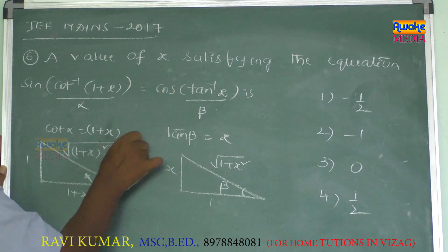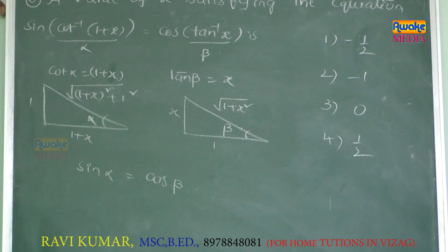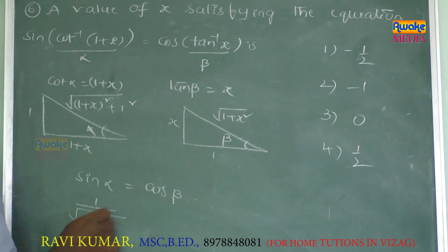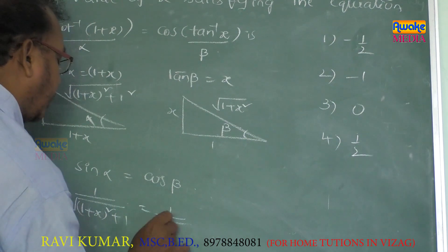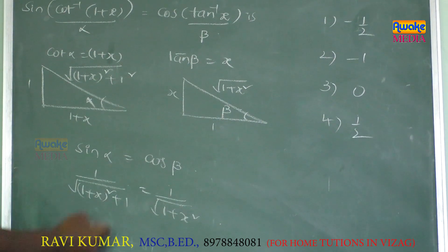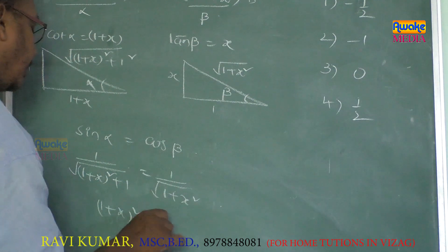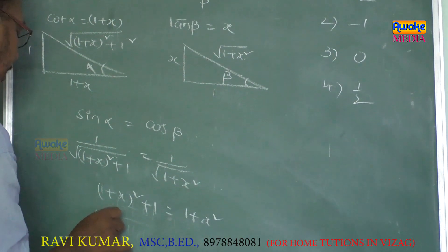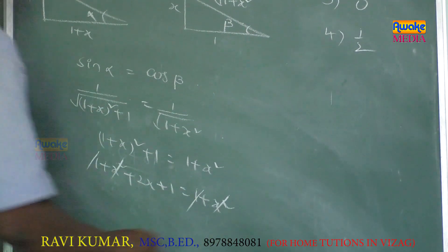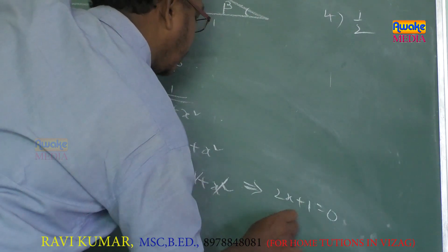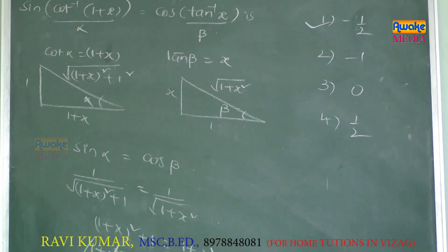From the given equation sin α = cos β. Sin α = opposite/hypotenuse = 1/√((1+x)² + 1). Cos β = adjacent/hypotenuse = 1/√(1 + x²). Equating denominators: (1+x)² + 1 = 1 + x², which gives 1 + x² + 2x + 1 = 1 + x², so 2x + 1 = 0, meaning x = -1/2. The first option is the answer.